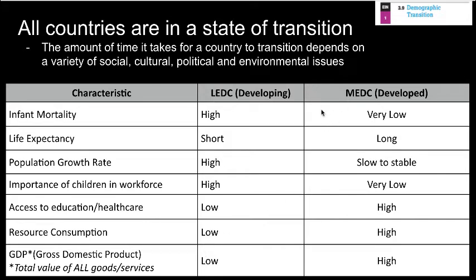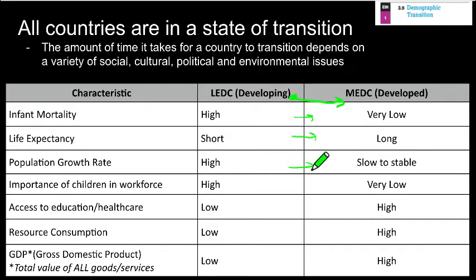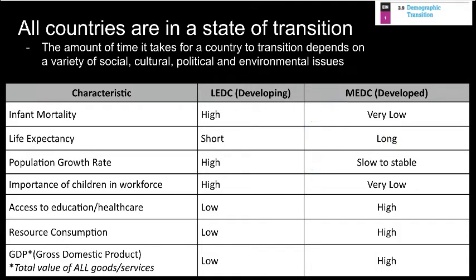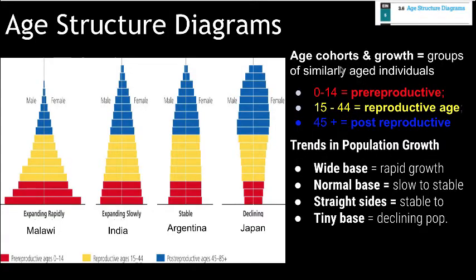MEDC countries are the opposite. As we move from developing to developed, these characteristics start to change: infant mortality drops as we get more medicine and access to health care, and life expectancy gets longer. As a society, this is where we want to go — no country wants high infant mortality or a short life expectancy. It does vary how long a country spends in the transitional phase, based on social, cultural, political, and environmental issues. All of those things are wrapped into a country's ability to move from LEDC to MEDC at different rates.